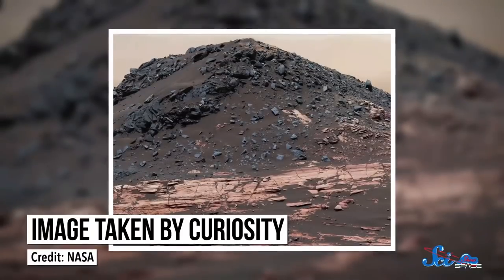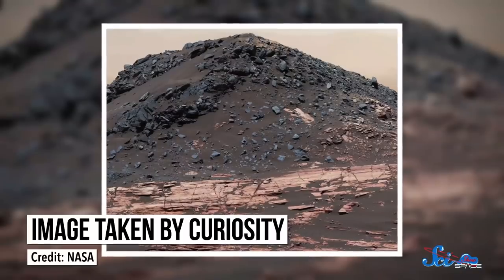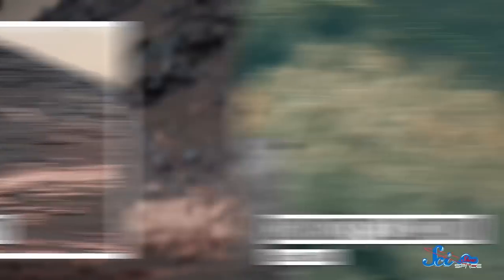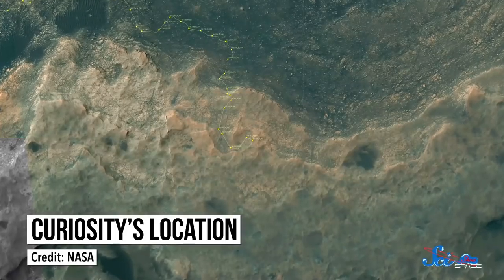Picking Curiosity's path isn't always the easiest either. To decide where it should go, engineers rely on pictures from the rover and from satellites in orbit. But Curiosity's cameras can only see so far, and the satellites have a top-down view, so they can't always see the true shape of surface features.